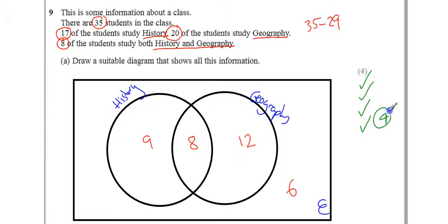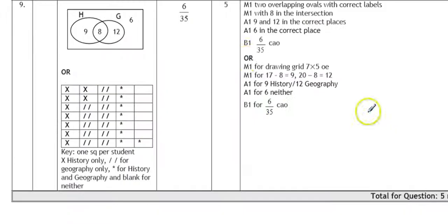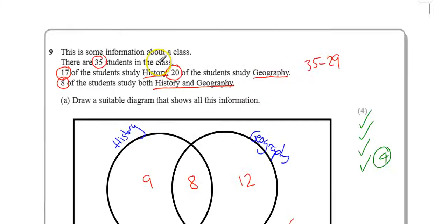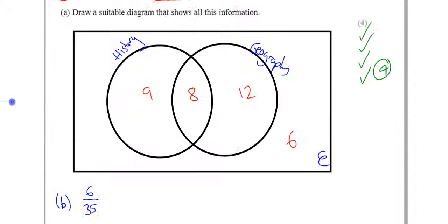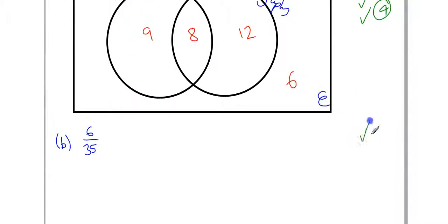So, part A, four marks. It says for part B, six out of 35. And this CAO means correct answer only. Correct answer only. So, let's have a look. Well, isn't that what we got anyway? I think that's what we got. Yeah, six out of 35. So, we get a single mark for that.